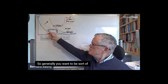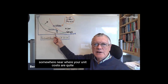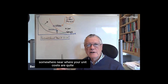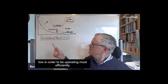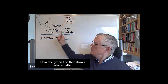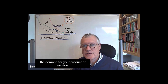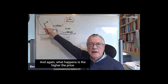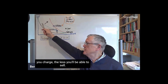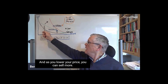Generally you want to be somewhere near where your unit costs are quite low in order to be operating most efficiently. The green line shows what's called the demand for your product or service — the higher the price you charge, the less you'll be able to sell.